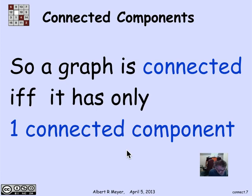So a graph is connected, then, means it really has only one connected component.